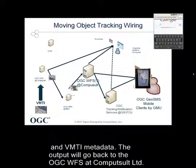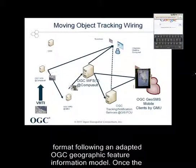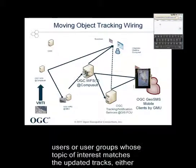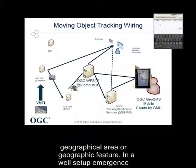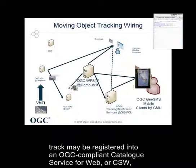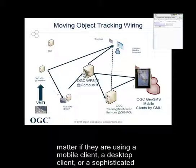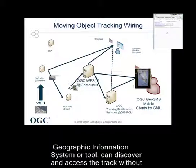The GeoSMS mobile client, called GMU Track Viewer, was developed as an Android app to run on smart mobile phones with Android 2.1 and later. The app supports notification messages of OGC GeoSMS version 1. It is capable of handling OGC WFS features and OGC camera files. It's fully interactive and uses Google Maps as a base to provide a comprehensive map view.